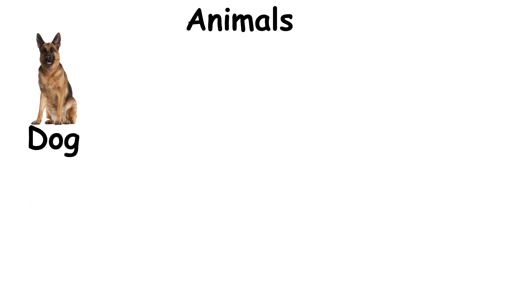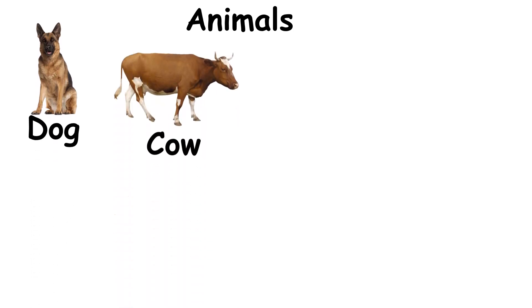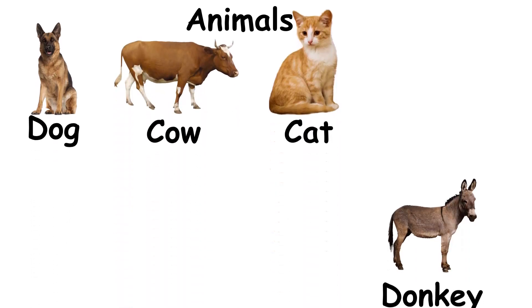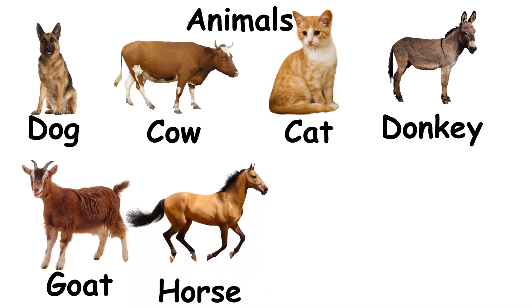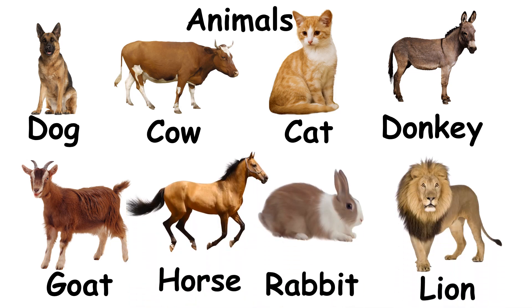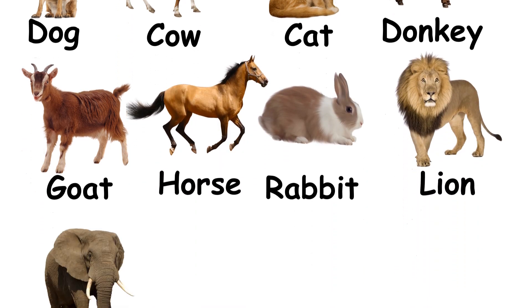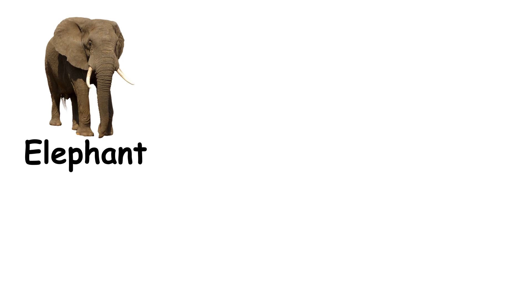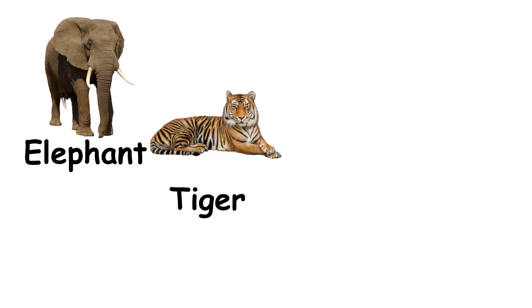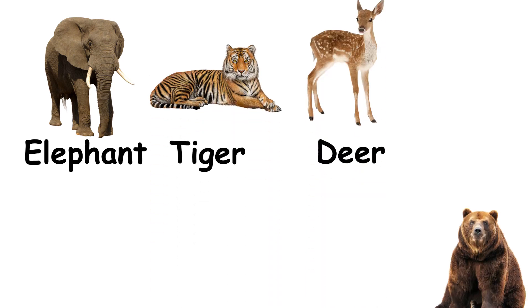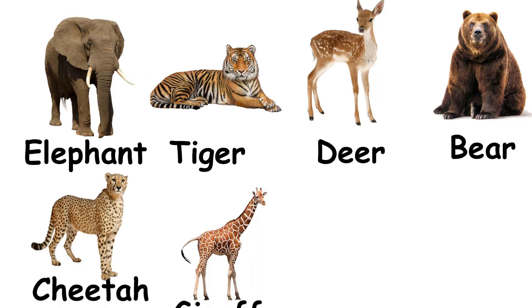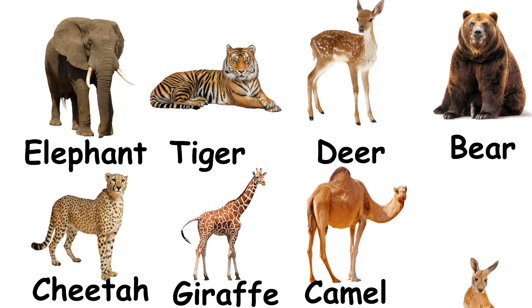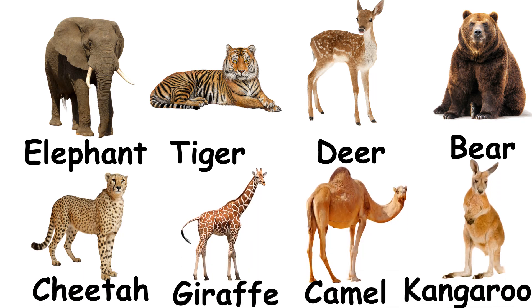Some animals we know are dog, cow, cat, donkey, goat, horse, rabbit, lion, elephant, tiger, deer, bear, cheetah, giraffe, camel, kangaroo and many more.